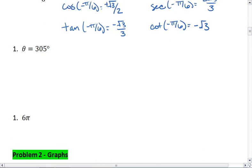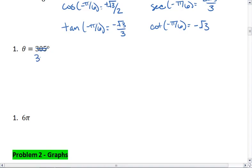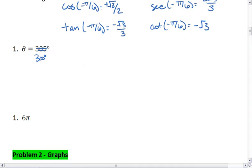Theta is 305°. That's an ugly one to work with. Let's use 300 instead. Actually, you know what, let's mix this up. Let's actually use 315.